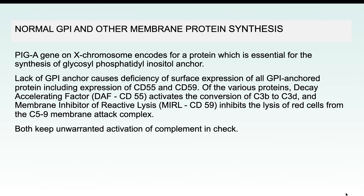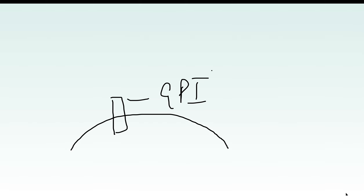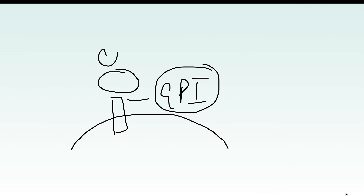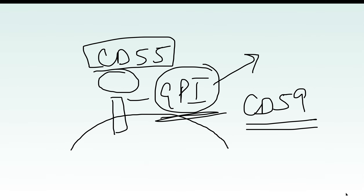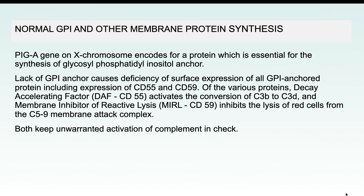Now discussing the pathogenesis, which is a very important part. On the RBC membrane, there are GPI-anchored proteins. These GPI-anchored proteins anchor proteins like CD55 and CD59, which are responsible for complement system regulation. In PNH, there is a defect in this GPI anchor protein.